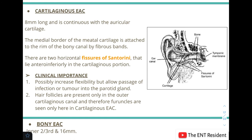The cartilaginous part is the outer one-third, 8 mm long, and continuous with the auricular cartilage. The medial border of the cartilaginous portion is attached to the rim of the bony canal by fibrous bands. A very distinct feature of the cartilaginous part are the two horizontal fissures of Santorini, present anterior-inferiorly in the cartilaginous portion.